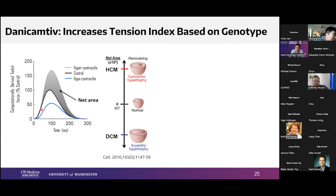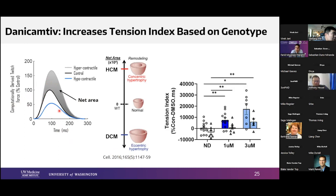Our group has been interested in predicting contractile phenotype in HCM or DCM. Jen Davis published a tension index — the area under the twitch curve — where a positive number indicates HCM-like hypercontractility and a negative number indicates DCM-like hypocontractility. The I61Q has a previously published negative area under the curve, which improves when Danicamptiv is given. As expected, the area under the curve also increases for control mice.